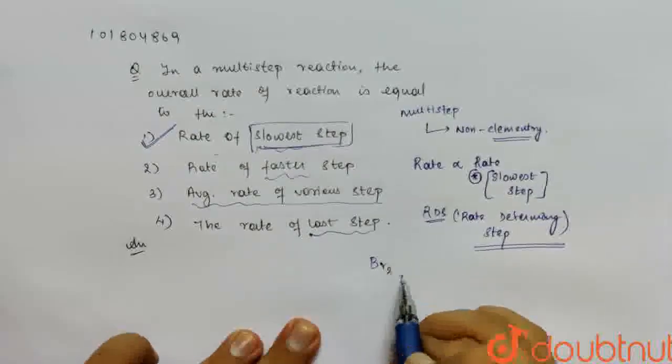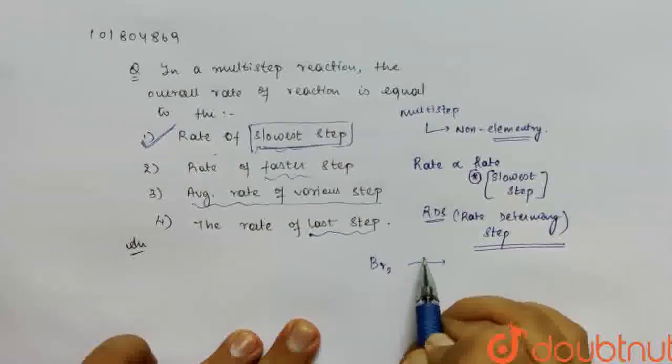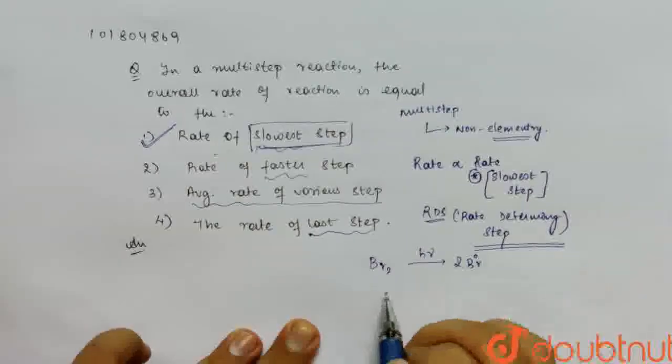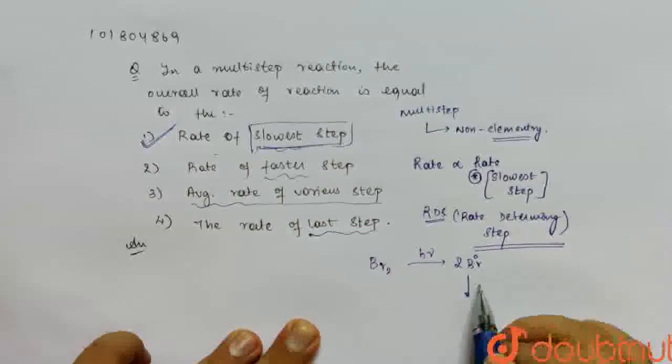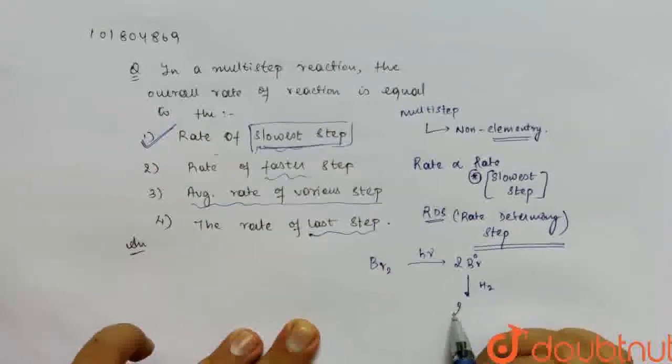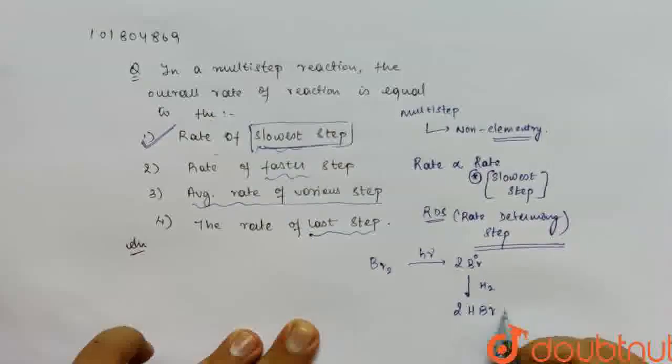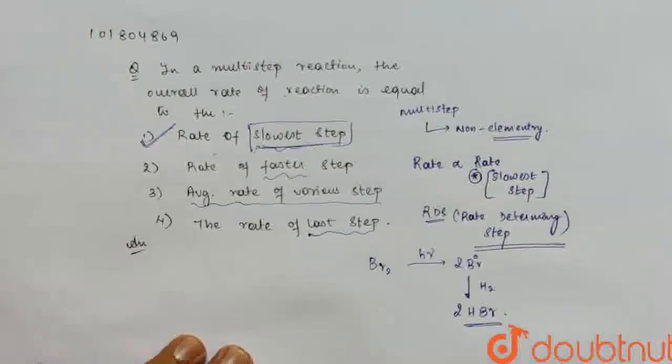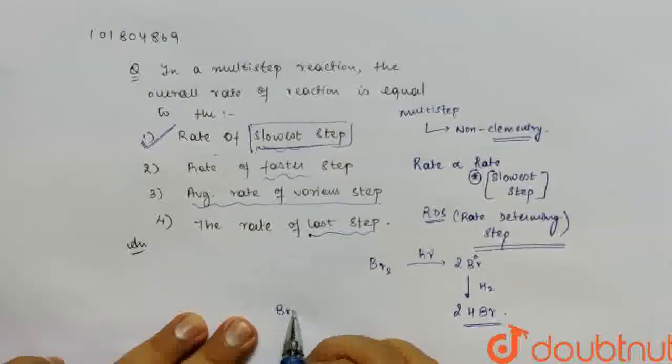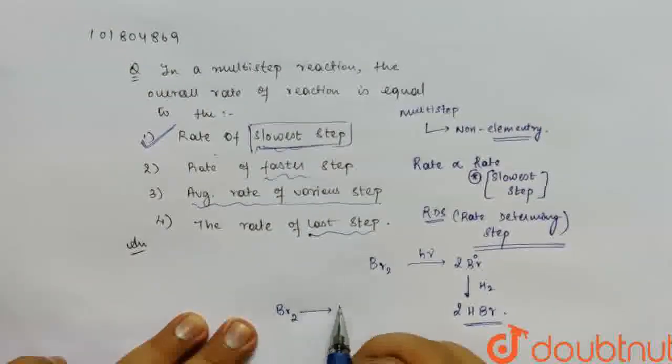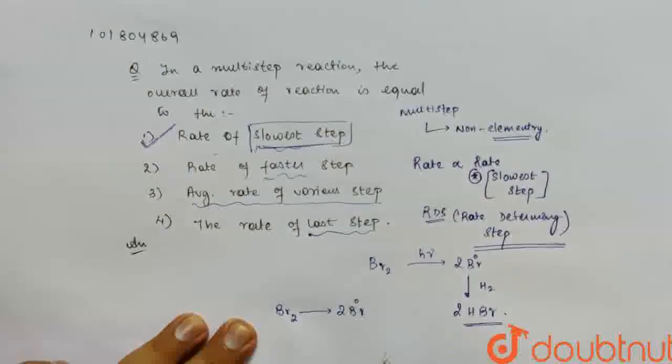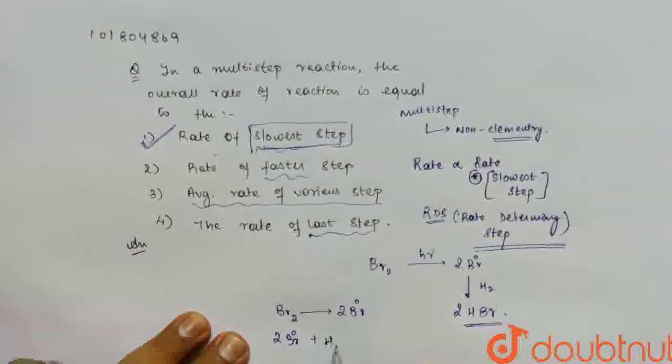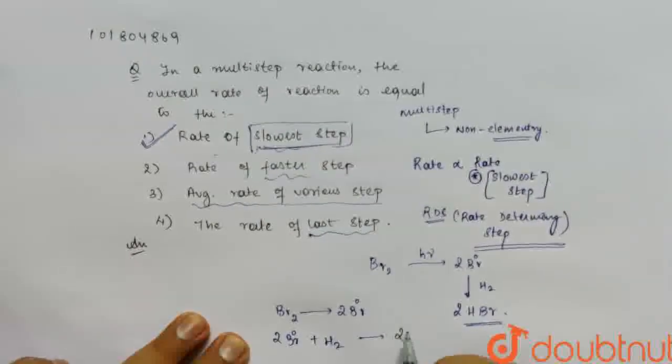So basically what happens in photo halogenation: Let's say this is BR2. You have exposed it to hν. So this gives two BR radicals. Now this BR radical, when you react with hydrogen gas, you have 2 mol HBr. So if you see here, basically there are two steps.